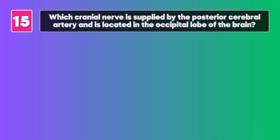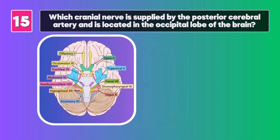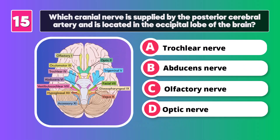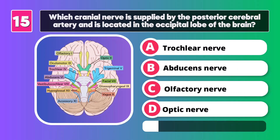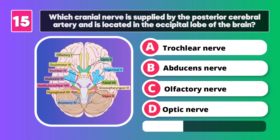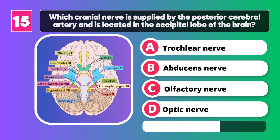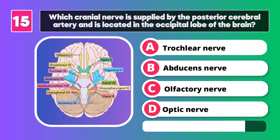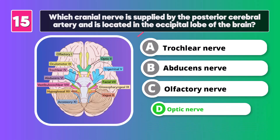Which cranial nerve is supplied by the posterior cerebral artery and is located in the occipital lobe of the brain? Optic nerve.